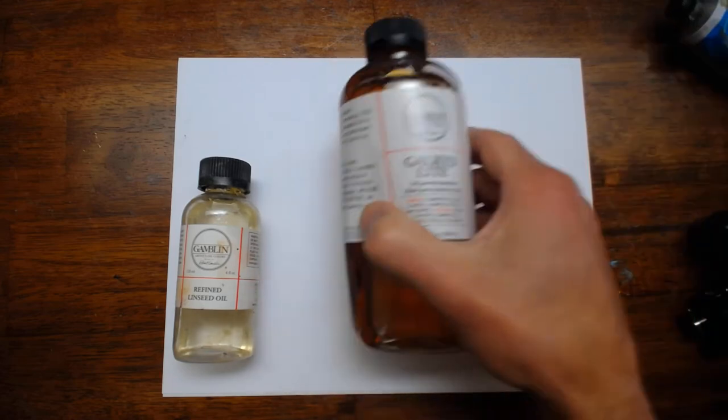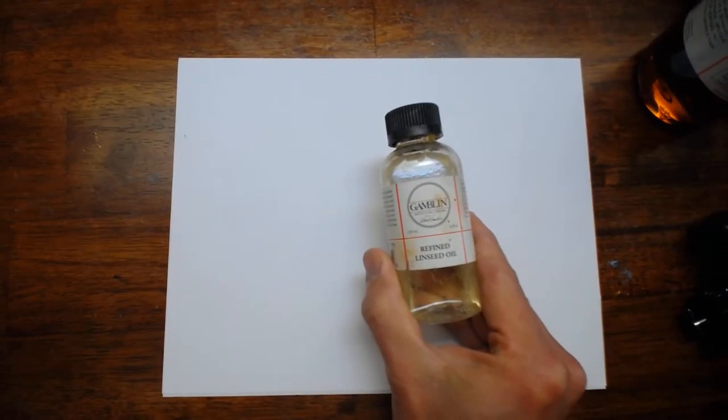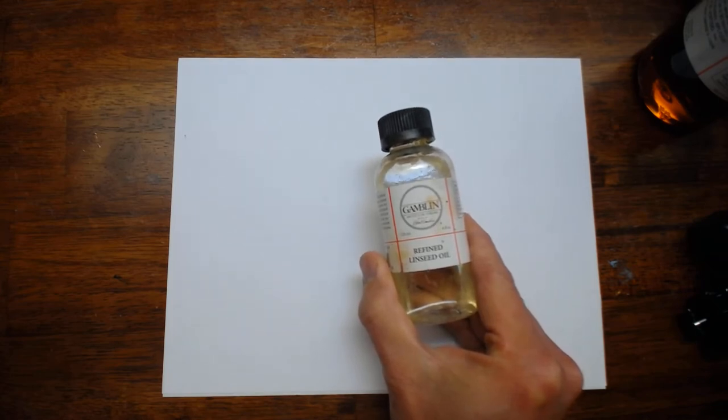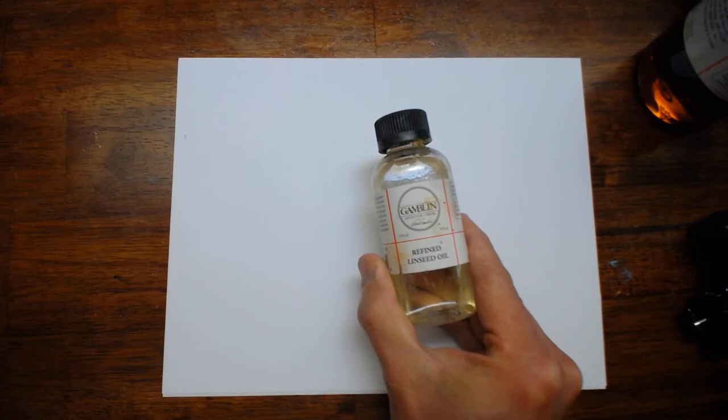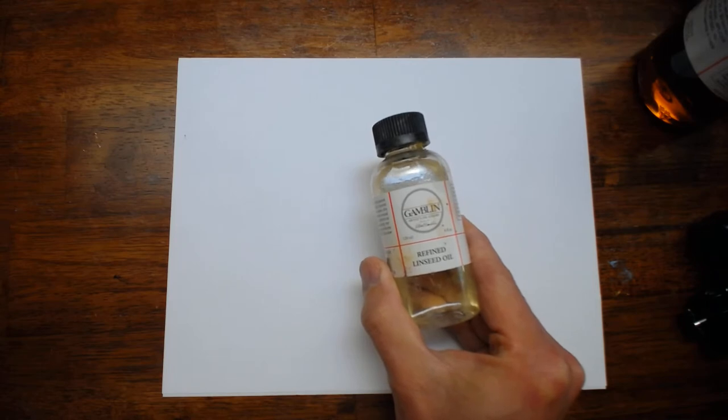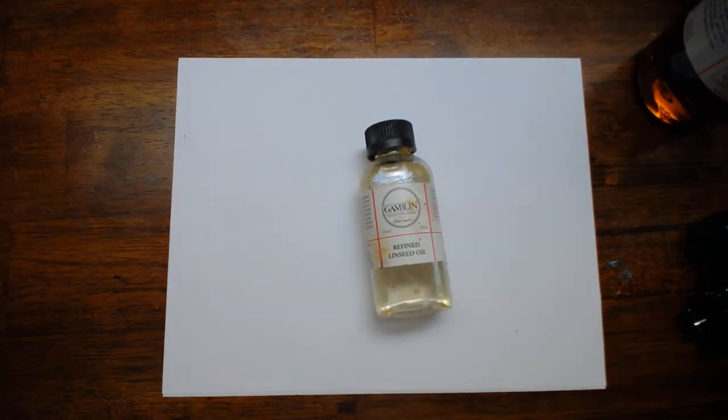To start off with, we've got refined linseed oil. Refined linseed oil is the oil from the flax plant, and it's been the main binder for oil painting for 600 years. Linseed oil is considered a drying oil, and other drying oils will include walnut oil, safflower oil, and poppy oil.